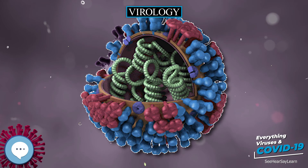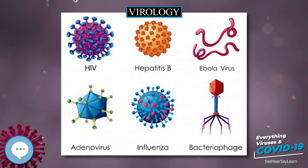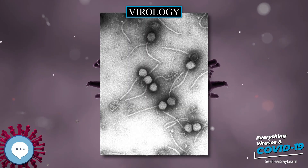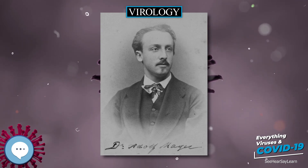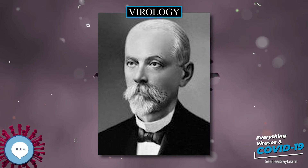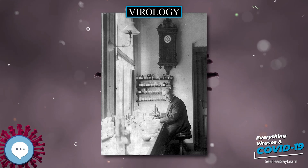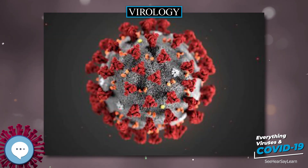The first retrovirus infecting humans was identified by Robert Gallo in 1974. Later it was found that reverse transcriptase is not specific to retroviruses; retrotransposons which code for reverse transcriptase are abundant in the genomes of all eukaryotes. About 10–40% of the human genome derives from such retrotransposons. In 1975 the functioning of oncoviruses was clarified considerably. Until that time, it was thought that these viruses carried certain genes called oncogenes which, when inserted into the host's genome, would cause cancer. Michael Bishop and Harold Varmus showed that the oncogene of Rous's sarcoma virus is in fact not specific to the virus but is contained in the genome of healthy animals of many species.